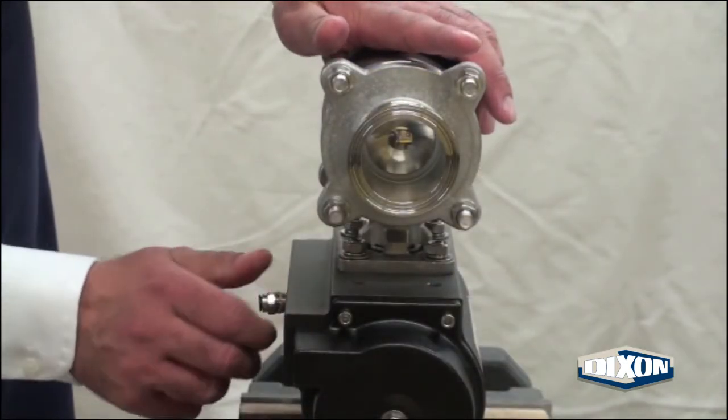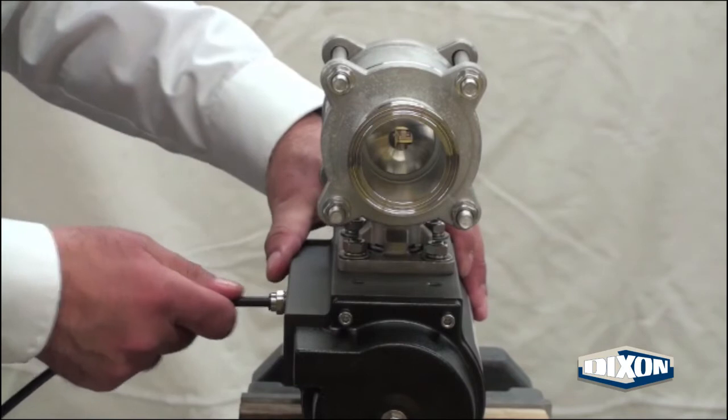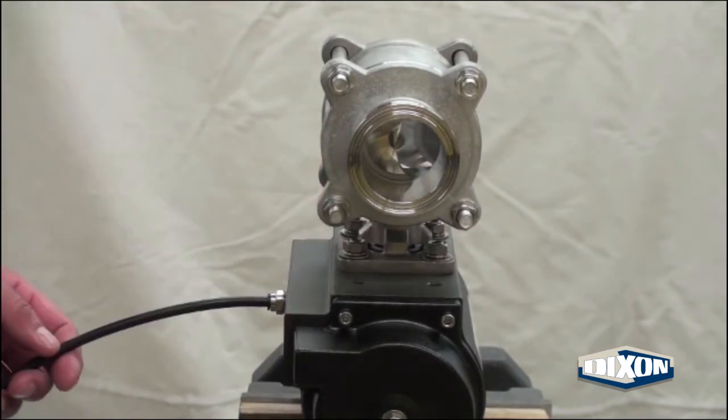Assemble an air fitting and an air line to the actuator body. Apply 80 PSI to rotate the ball.